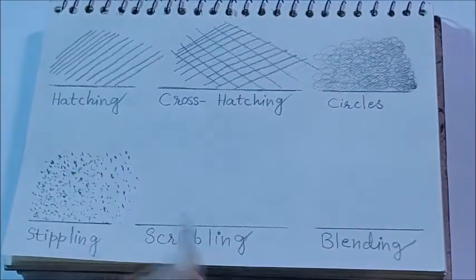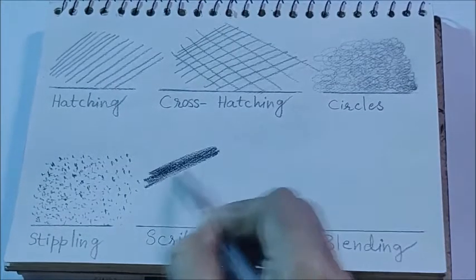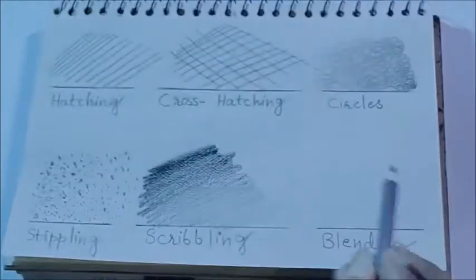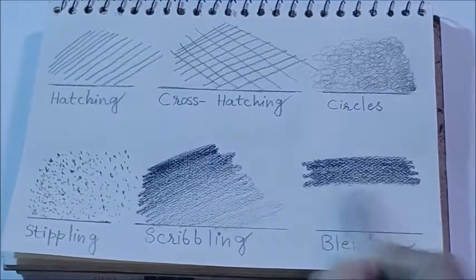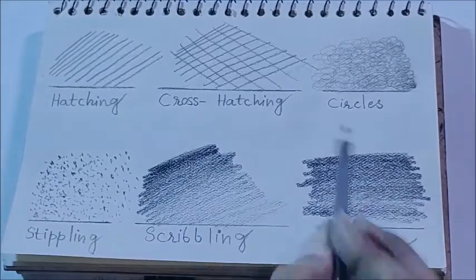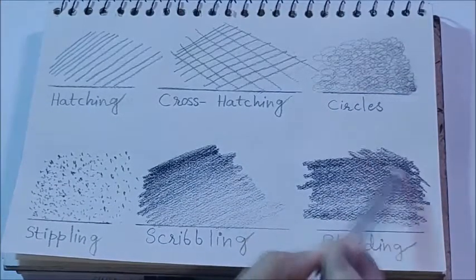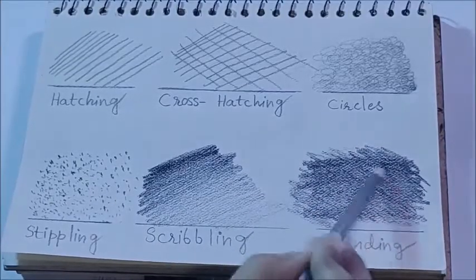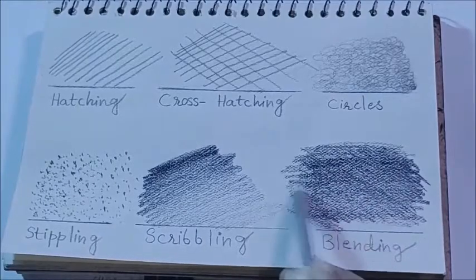In scribbling, dark, medium, and light tone shading is created with a back-and-forth pencil movement — it is a very easy method of shading. In blending, the pencil is moved in the same way as scribbling, but care is taken that the lines are less visible and they blend together — this is called blending.